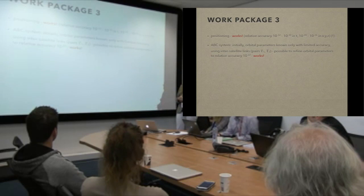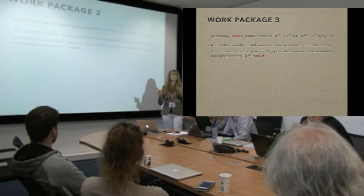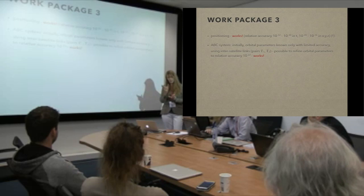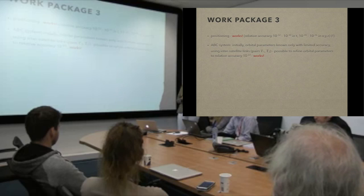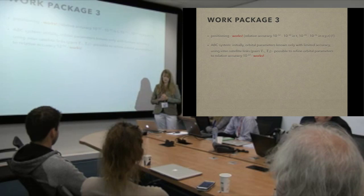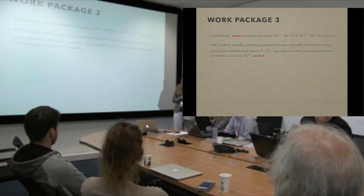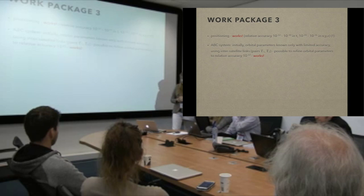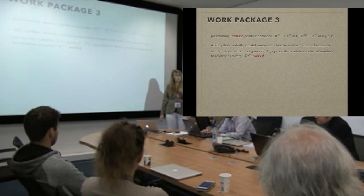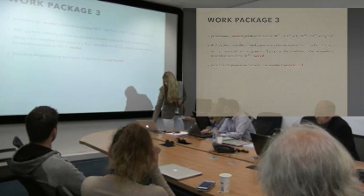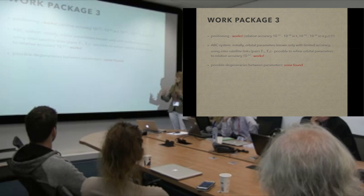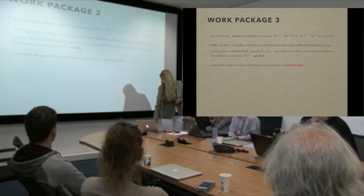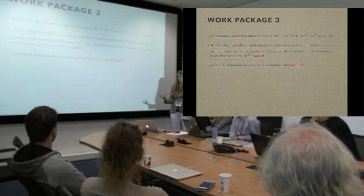We assumed initially that these satellites don't know their orbital parameters very accurately, then used the pairs of proper times they exchange. We found it was possible to refine the orbital parameters of both satellites to very high accuracy — a relative accuracy of 10 to the minus 22. The basic result is that this works: orbital parameters can be very accurately determined. We also looked for degeneracies between parameters and found none, which we believe is due to the gravitational perturbations breaking the spherical symmetry.